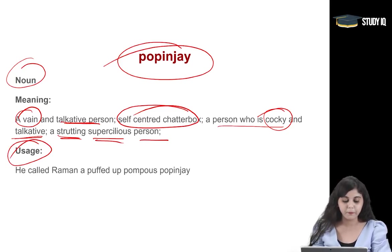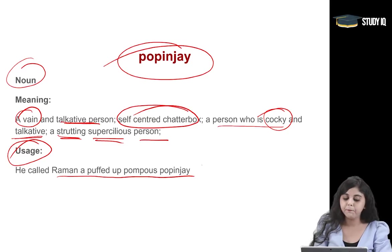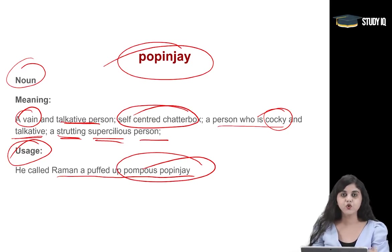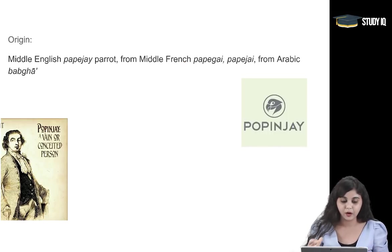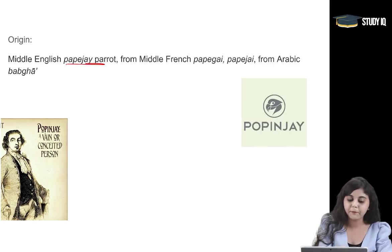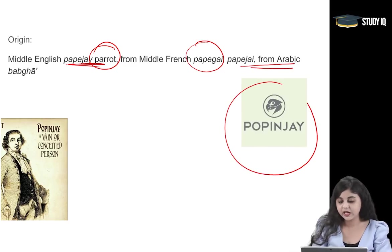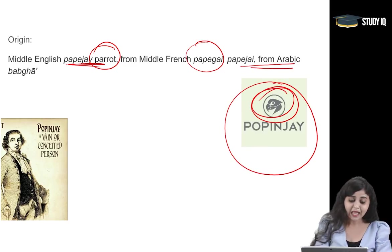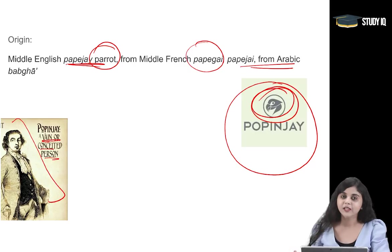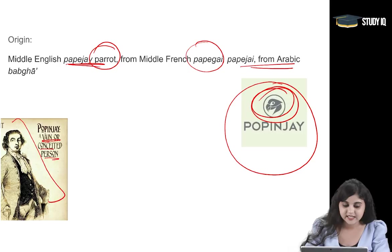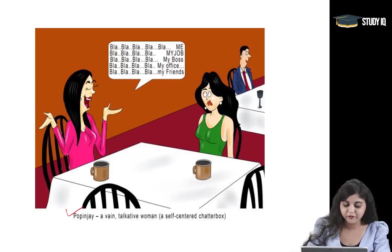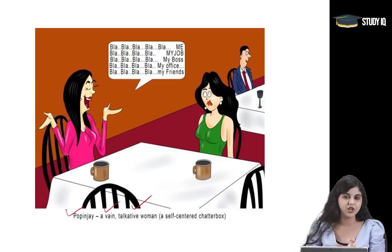Let's look at the usage of the word popinjay: 'He called Raman a puffed up pompous popinjay.' This is how you can use the noun. Its origin is coming from 'papegai' meaning parrot, and it also comes from an Arabic word. As you can see in the image, popinjay — the parrot — and popinjay is a vain or conceited person. The person is very proud, vain, conceited, supercilious. Popinjay: a vain, talkative person, a self-centered chatterbox.